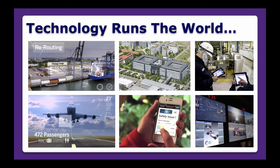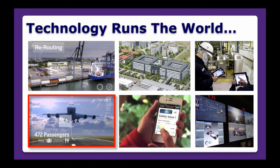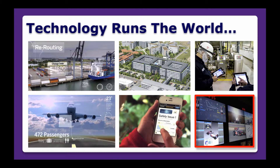Technology runs the world and behind the scenes enterprise-wide software systems are managing what happens. Whether it be a change order which reloads a large ocean-going ship, whether it's factories and monitoring of processes, whether it's keeping airplanes on time and making sure they deliver the right freight, whether it's reporting on safety issues or even monitoring the real-time data coming from a racing car — SAP and ERP is designed to enable all that to happen.